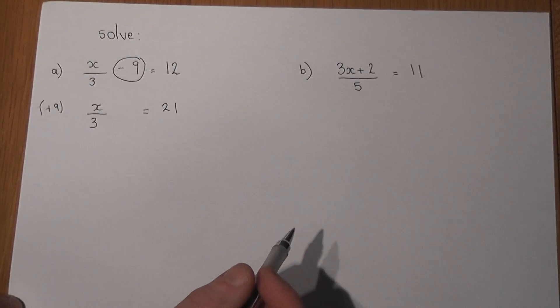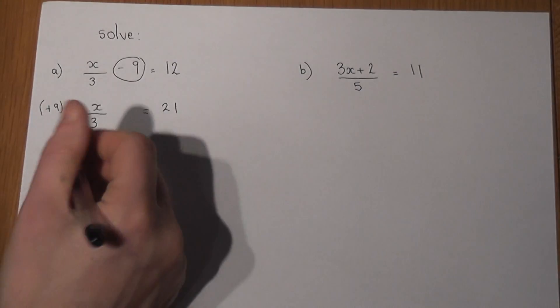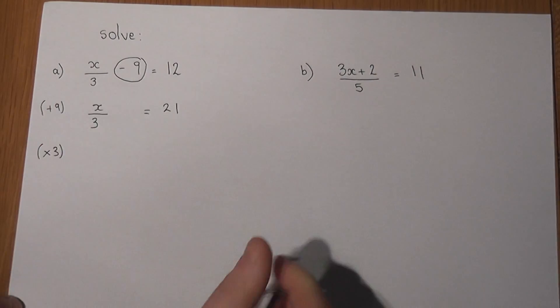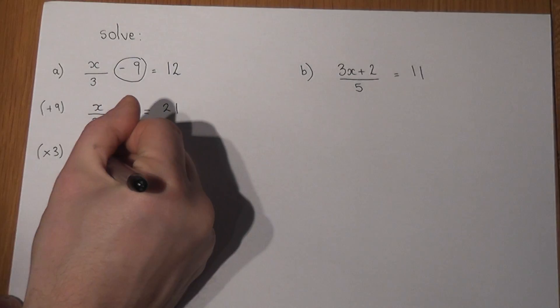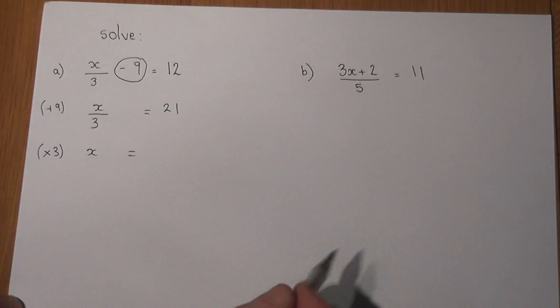Now the fraction line means divide, so to solve this equation we do the opposite or the inverse function - we multiply by 3. So this means that x equals, and if we work out three lots of 21...